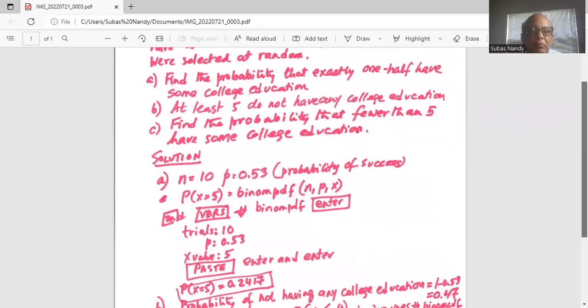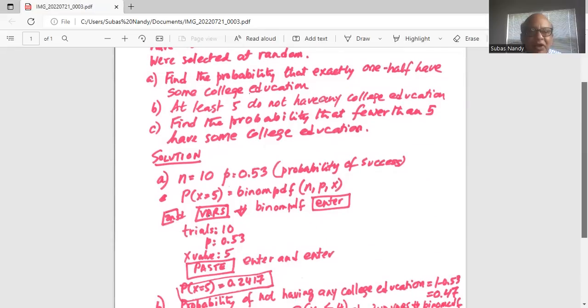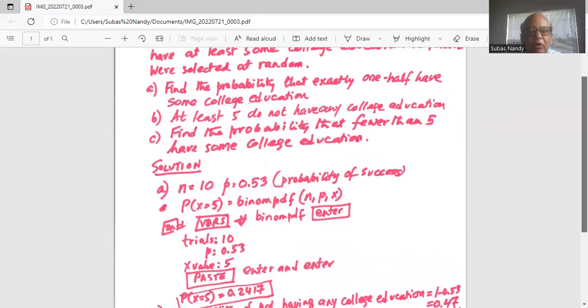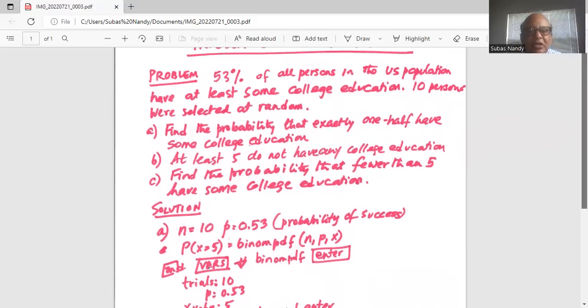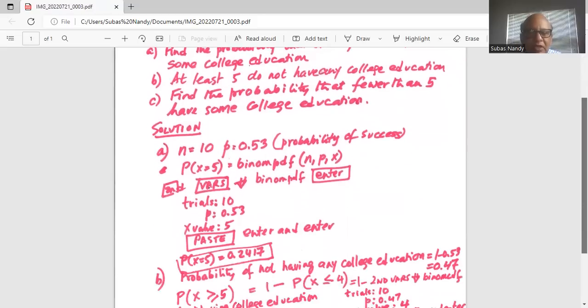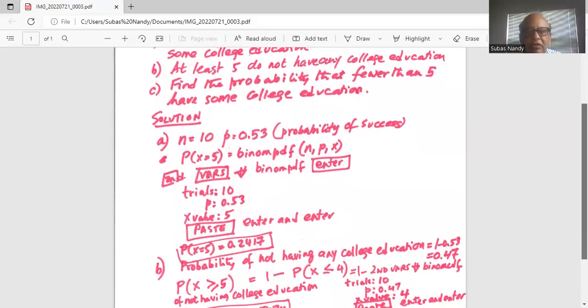Now part B: find the probability that at least five do not have any college education. We know 0.53 is the percentage of people who have college education.